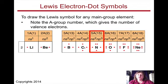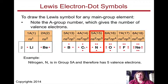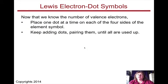And if we take a look at nitrogen, nitrogen is in group 5A, and therefore has five valence electrons. Now that we know the number of valence electrons, you need to place one dot at a time on each of the four sides of the element symbol. You keep adding the dots, pairing them up, until all are used up.